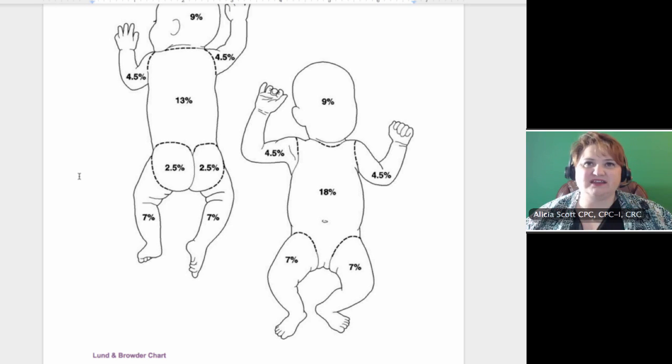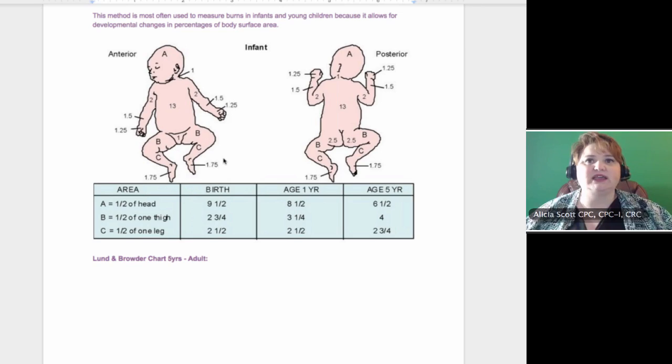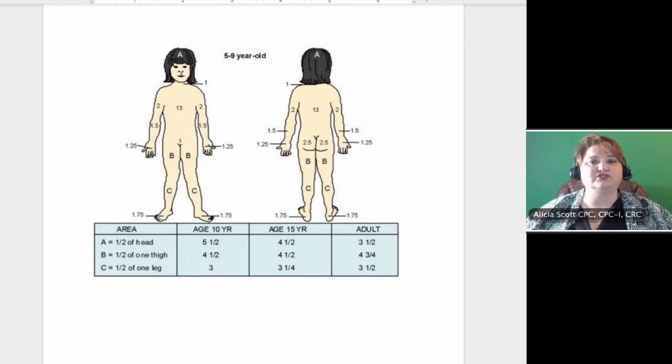This is the Lund-Browder. This is how this divided up. The first one is they do an infant. Now all this is a rule of nines, but it's the same concept except they're dividing everything up a little smaller. So you've got the feet, you've got the hands, you've got the forearm, and you've got the neck. It's done by age. And if you scroll down a little bit more, it's going to give you an adolescent or a child. Again, age 10 years, 15 years, adult.